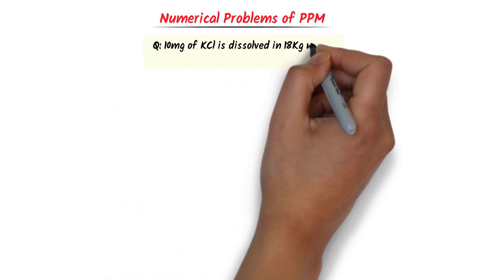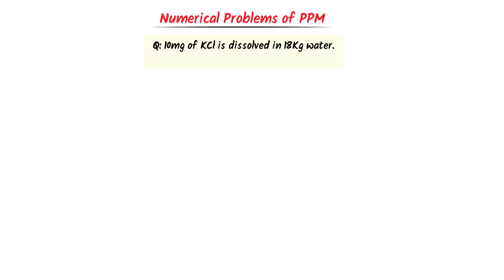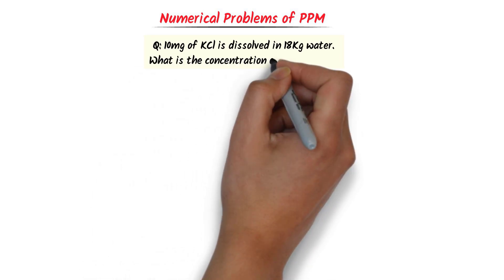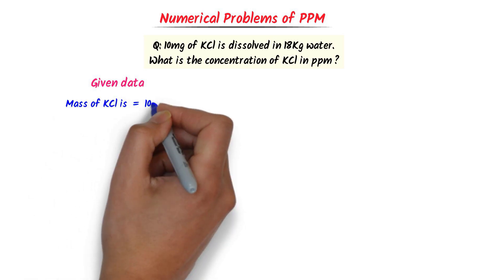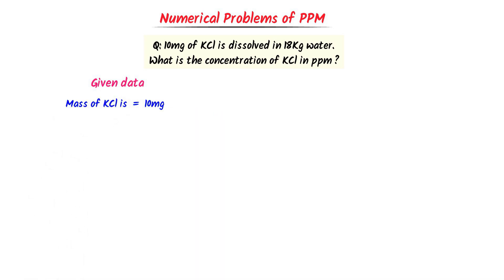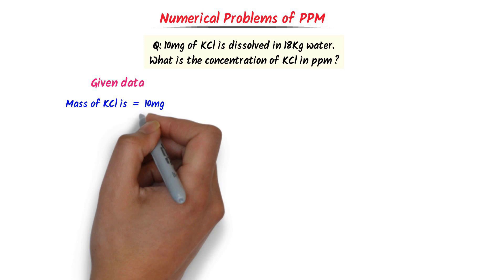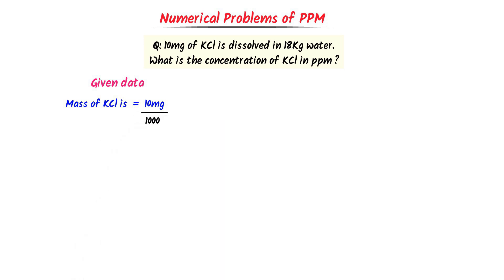Now we will learn some important numerical problems of ppm. Consider this numerical problem: 10 milligrams of potassium chloride is dissolved in 18 kg of water. What is the concentration of potassium chloride in ppm? I write the given data. The given mass of potassium chloride is 10 mg. I convert this mass to grams by dividing by 1000, and I get 0.01 grams.